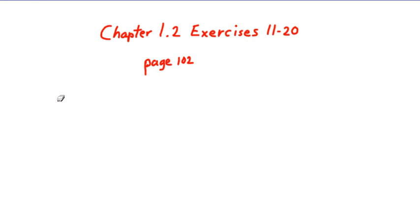Chapter 1.2, exercises 11 through 20, page 102. This is section 1.2 in the book that deals with determining domain and range, and we're going to cover the odd number problems between 11 and 20.